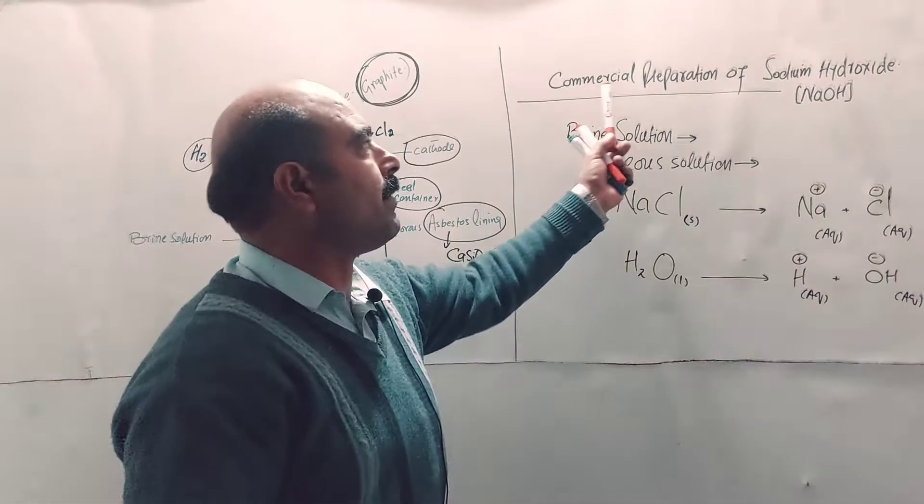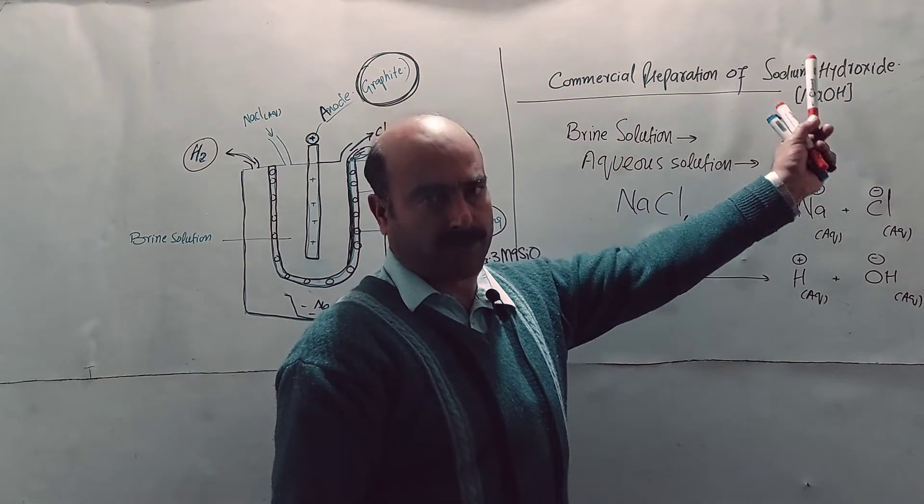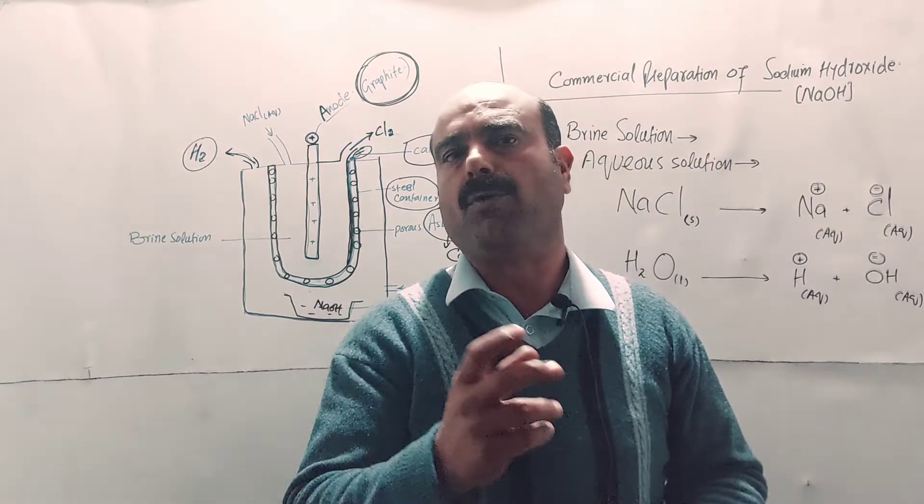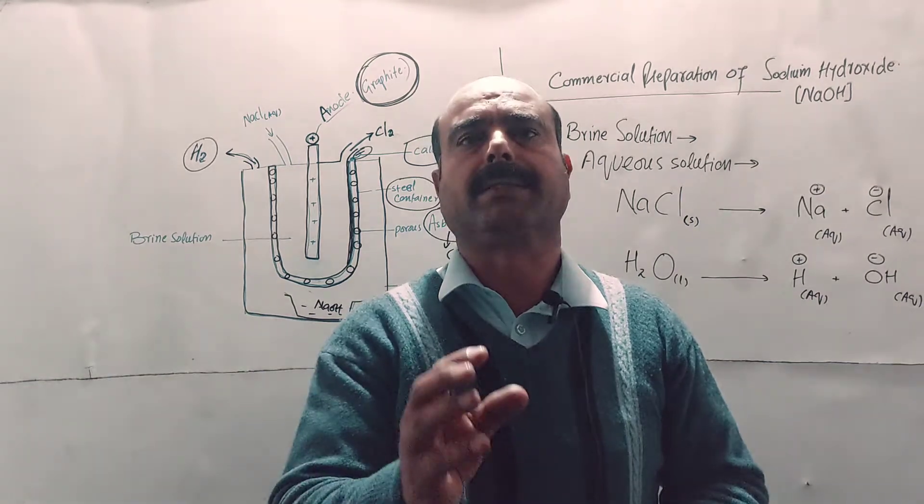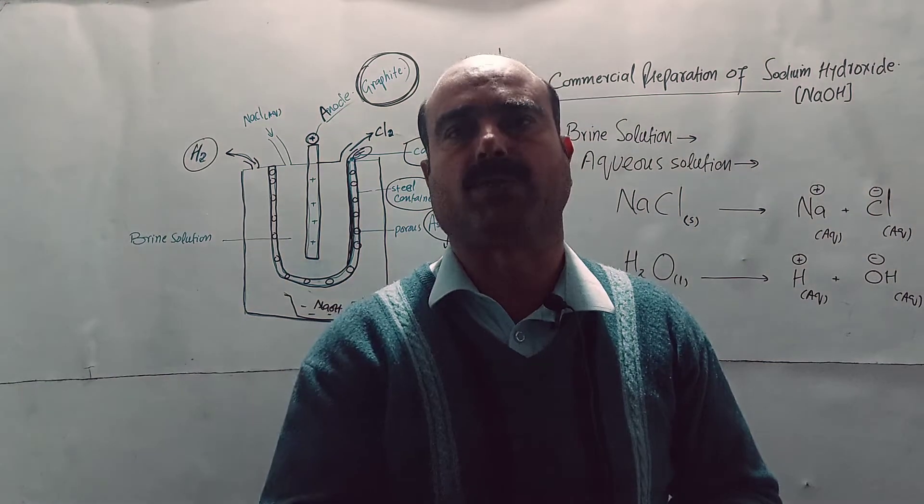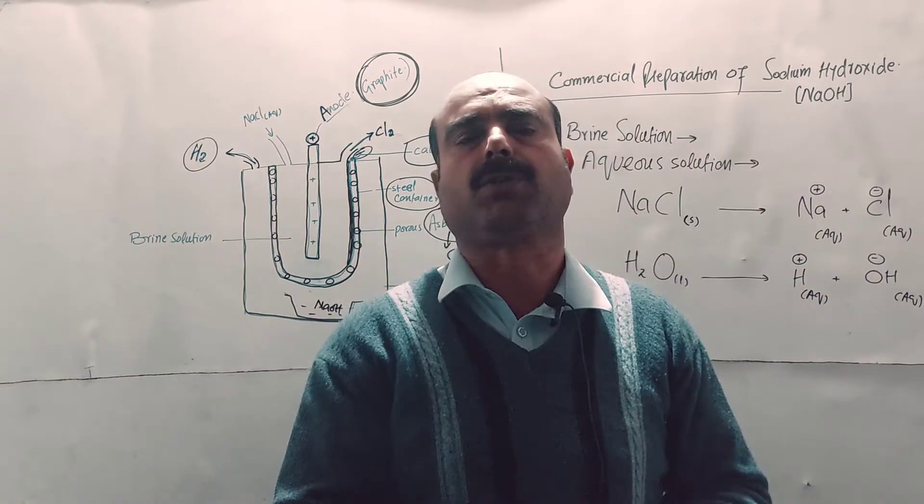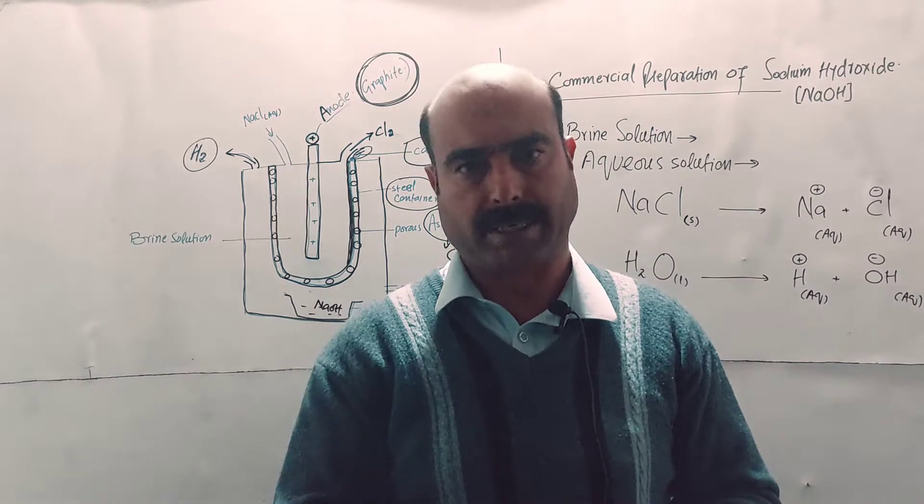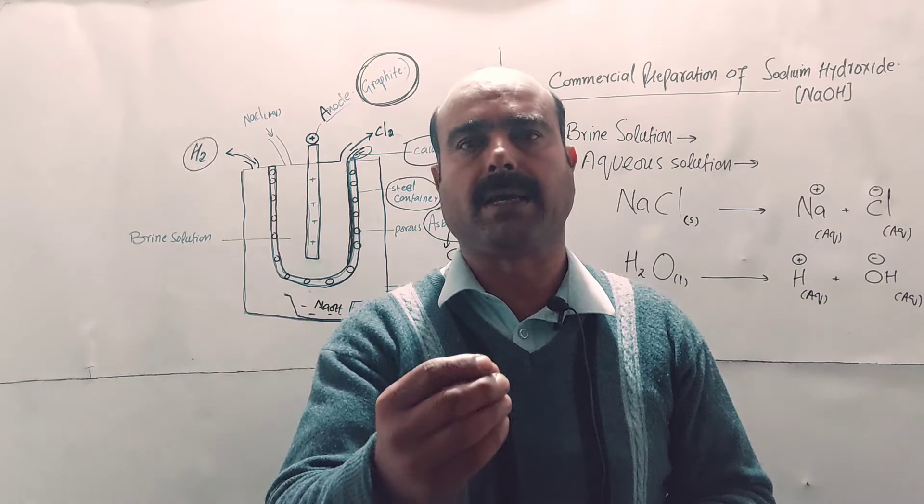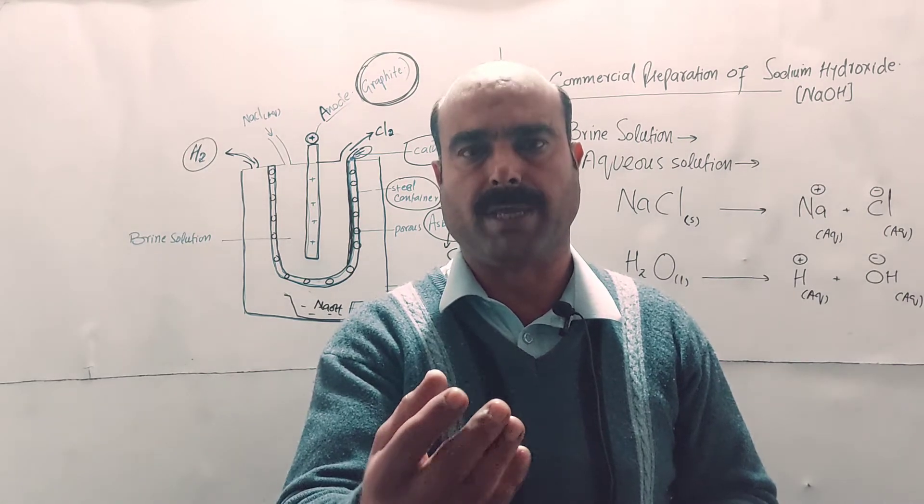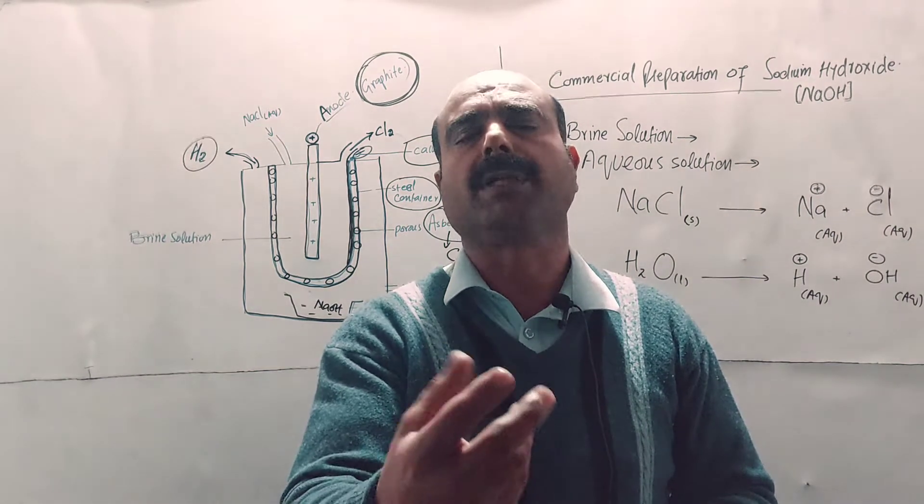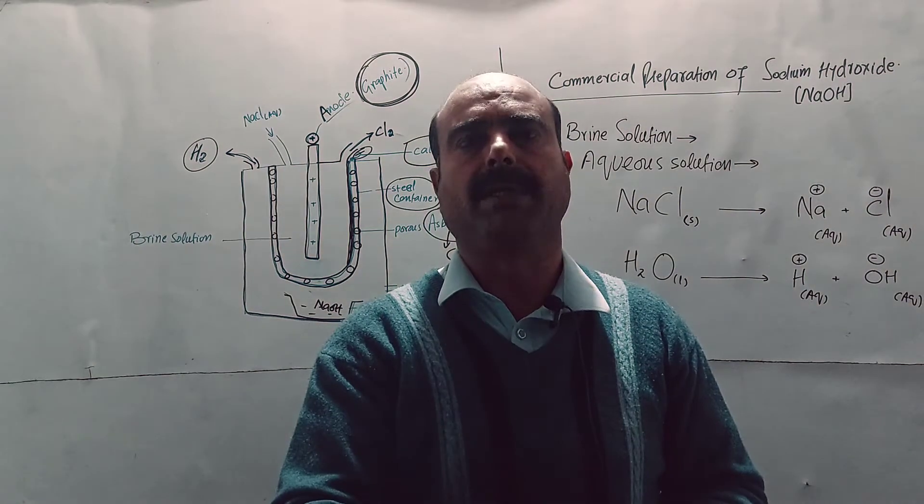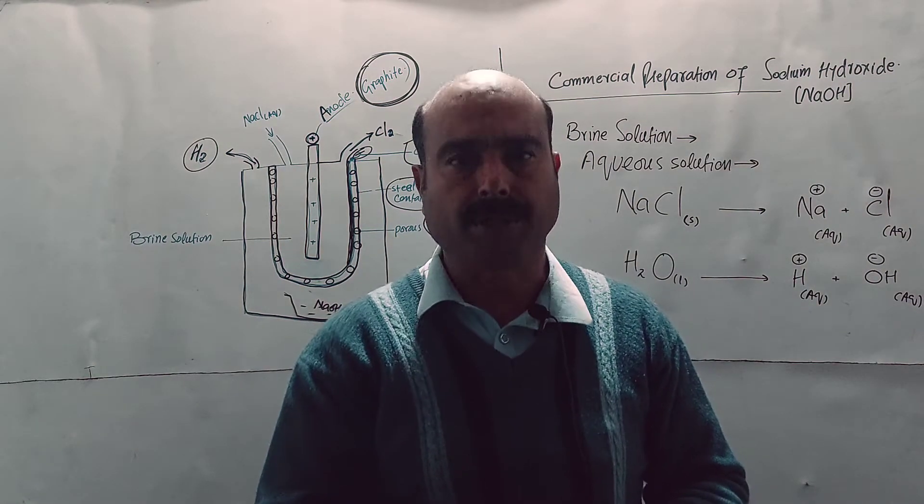The topic is the commercial preparation of sodium hydroxide. Sodium hydroxide chemical formula is NaOH. It is also called caustic soda because of its corrosive action on the skin. Corrosion damages the skin and soft tissues, hence the name caustic soda.